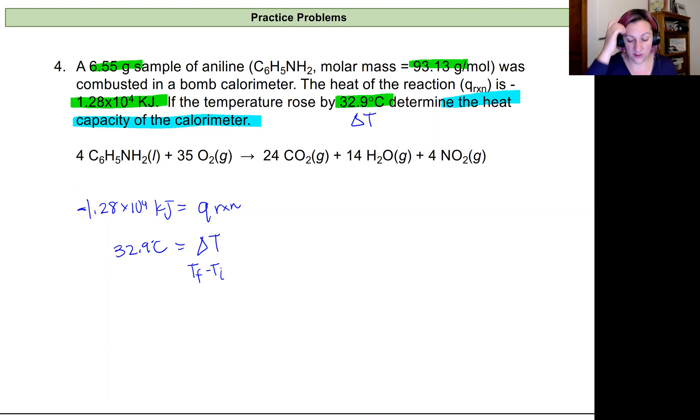To figure out the heat capacity of that bomb calorimeter, we know the heat of the calorimeter will equal the heat capacity of the calorimeter times the change in temperature. So I have my change in temperature right here, and I have my heat of the calorimeter that I need, but I have my heat of my reaction. Remember that the heat of the reaction is always equal to the negative of the heat of the calorimeter.